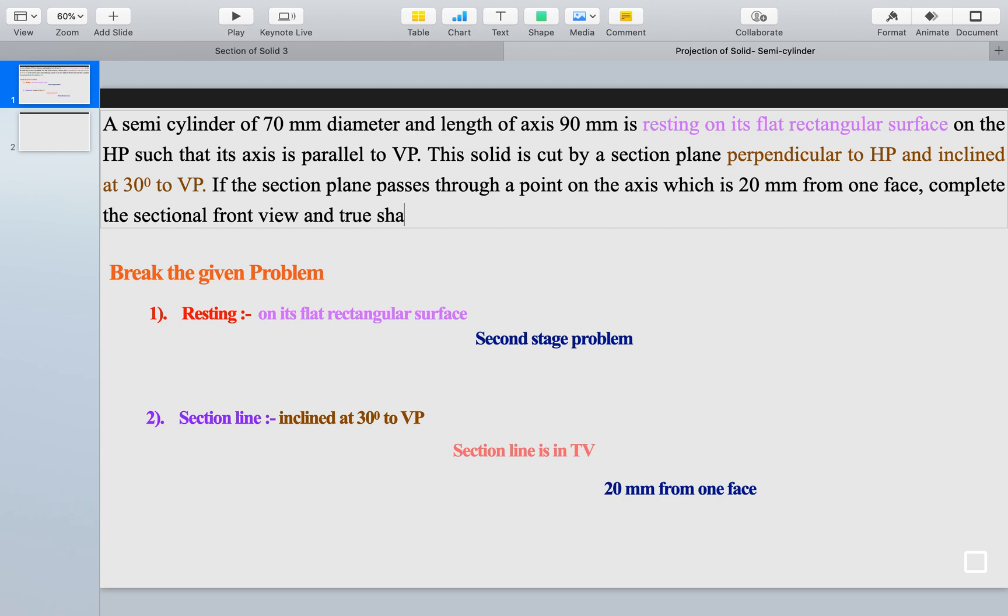This is the question - means the 30-degree section line must pass through a 20mm point which is away from one of the faces, maybe the bottom face or top face. Once we draw, we will decide this. But we received information that the section line belongs to top view and it passes...